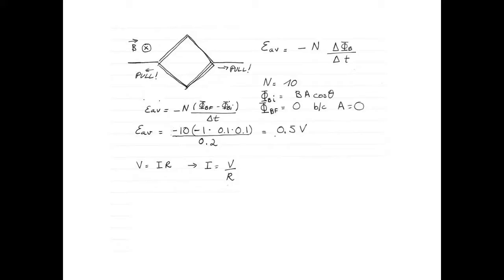To find the induced current, we use Ohm's law. So V is equal to IR becomes I is equal to V over R. And half a volt divided by 10 ohms will give us 50 milliampere. So 50 milliampere is our induced current.